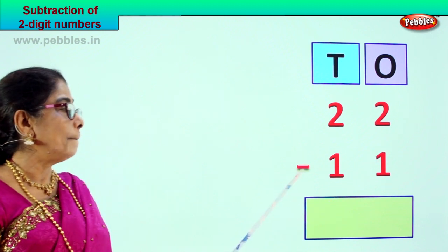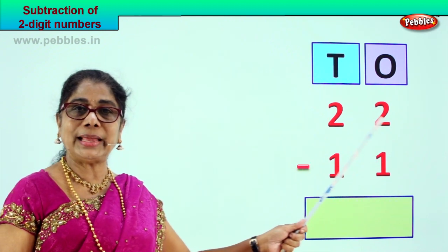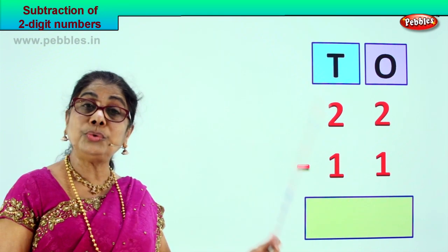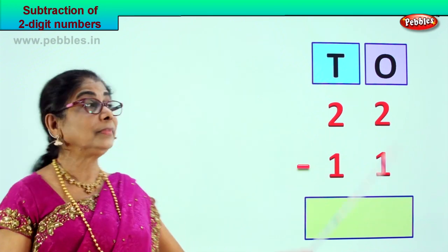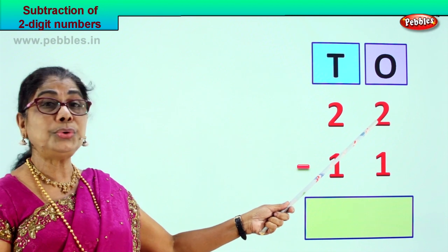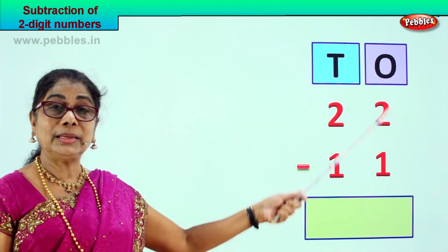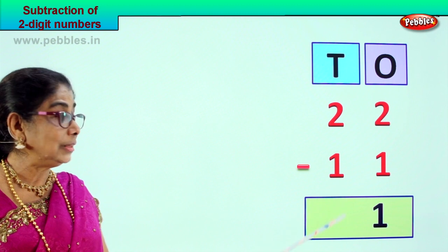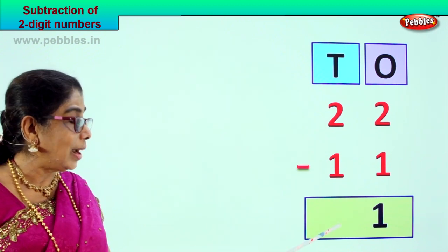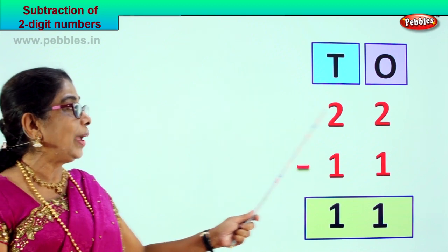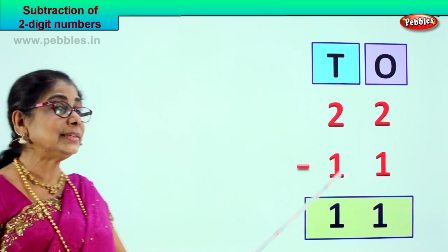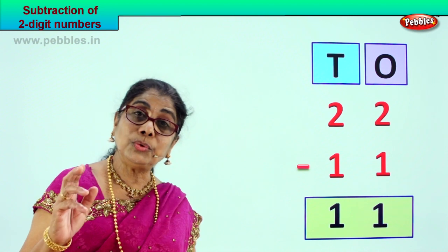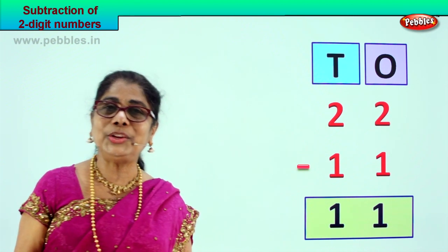Twenty-two minus eleven. Two tens, two ones minus one ten, one one. We have put them in ones and tens order. Twenty-two take away eleven. Go to the ones: two minus one is one. In the tens: two minus one is one. Twenty-two minus eleven gives you the answer eleven. Twenty-two take away eleven, you get eleven.